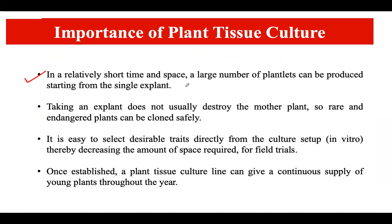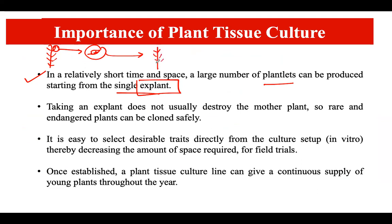A major advantage is that in a relatively short time and small space, a large number of plantlets can be produced starting from a single explant. For example, using a small leaf segment as an explant, you can culture it on an artificial medium and grow a whole new plant — requiring very little space and far less time compared to natural plant growth. Also, taking an explant does not destroy the mother plant, so rare and endangered plants can be cloned safely.